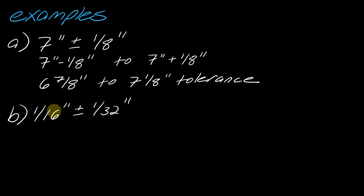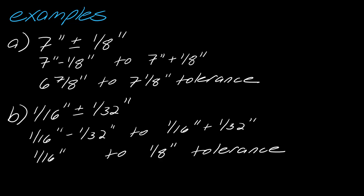So this is what that range or that tolerance would be. So six and seven eighths inches to seven and one eighth inches. So this would be that range that you're looking for. So if we do that again with this next one, you start from the bottom. So I'm going to start one sixteenth inch minus one thirty-second, and then plus one thirty-second. So this plus or minus is telling you the two things that you need to do with the second number. If I go ahead and plug those into my calculator, I get one sixteenth inch to one eighth inch tolerance.